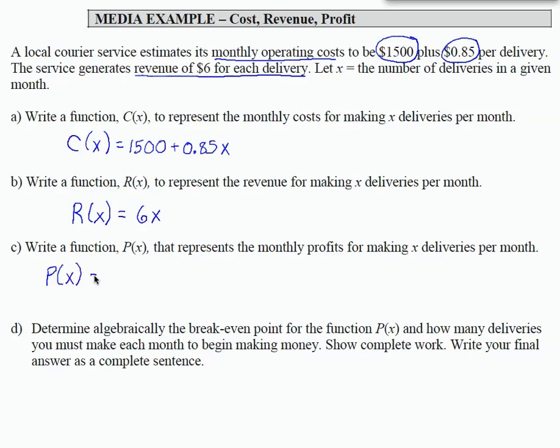The way we determine that is, this is a standard function that works across many problems, is revenue minus cost. So this profit function is an example of function subtraction. Revenue minus cost. So we're going to insert our revenue function in parentheses, which is 6X, and subtract our cost function also in parentheses.